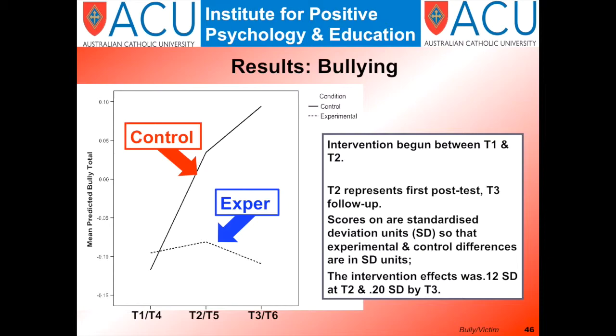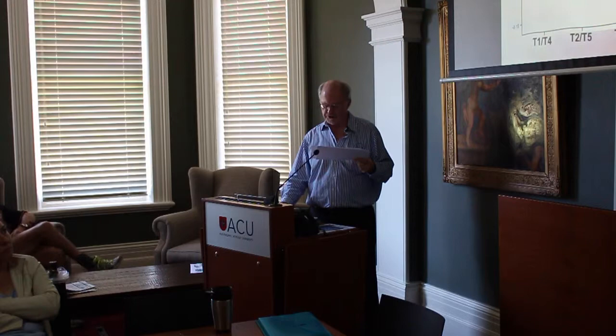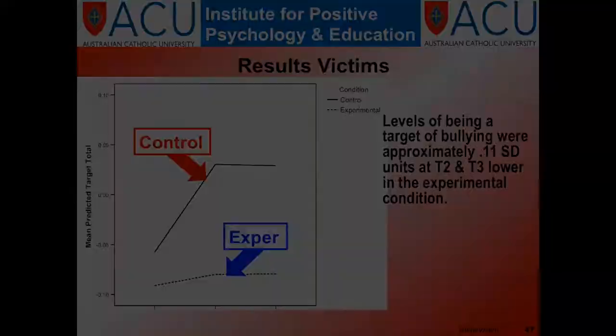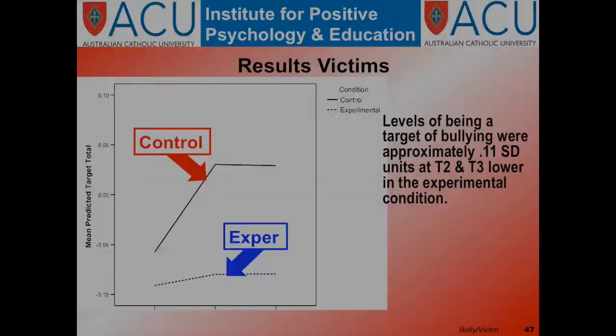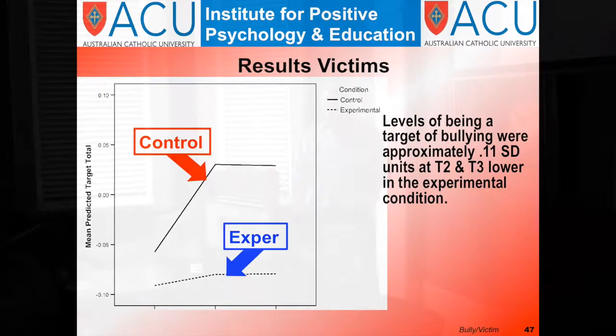The intervention was equally effective across year groups and for male and female students. On average, the intervention also lowered levels of victim scores, though not as much as seen with bullying scores. The intervention was more effective in reducing verbal victim scores among girls, and didn't interact with sex effects for social and physical scales.